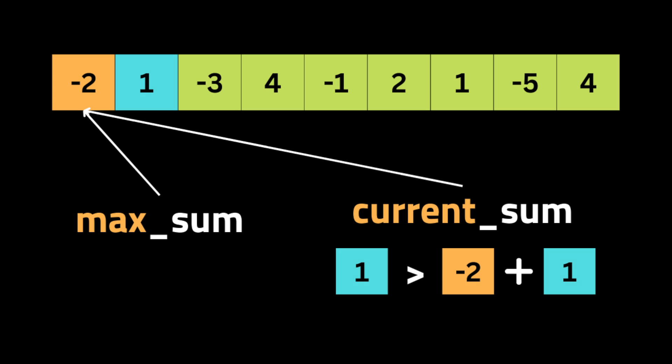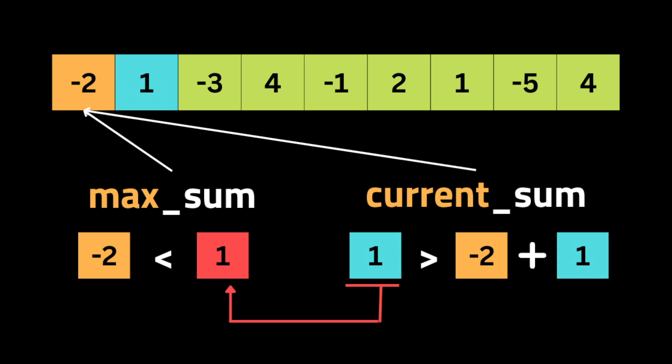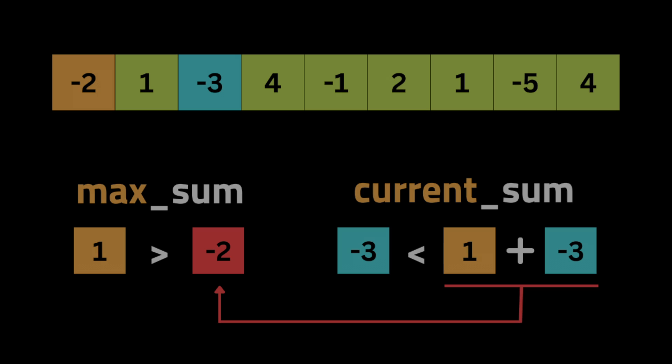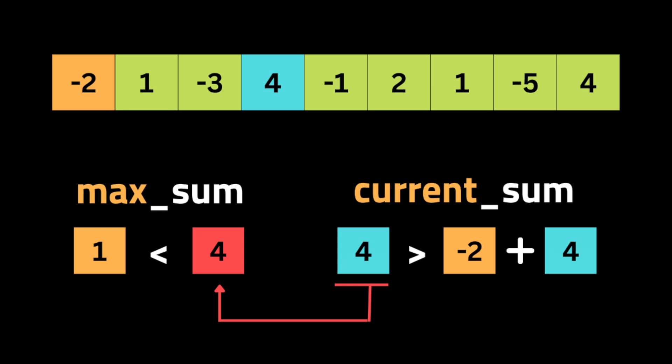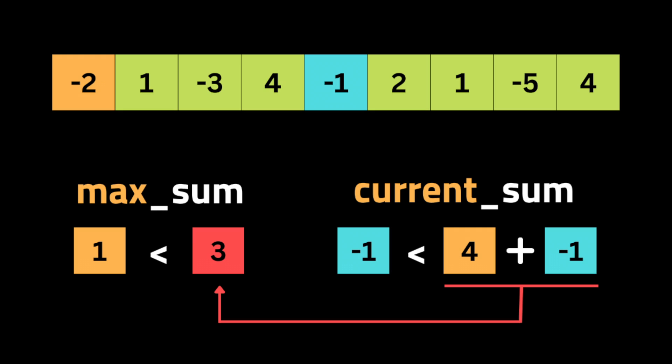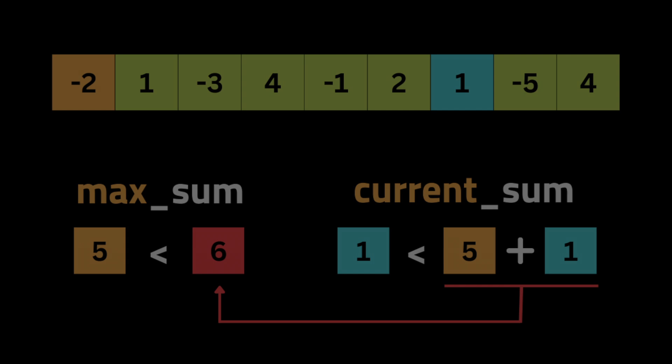Then we start iterating through all the numbers in the array starting from the second number. At each iteration, we update current_sum to be the maximum between the current number and the previous current_sum plus the current number. This is because we want to make sure that current_sum is never less than zero — if it's negative, it means the current subarray is not adding any value and we should start a new subarray from the current element.